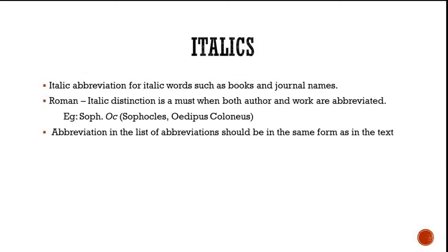Coming to italics — certain abbreviations will be italicized. Those words written in italics, such as book or journal names, will have their abbreviations italicized as well. There is also a Roman–italic distinction: when referring to the author we use Roman, and to refer to the work we use italics. For example, Sophocles is in Roman, while Oedipus Colonus — the name of the work — is italicized.